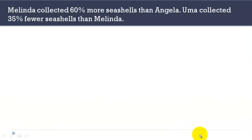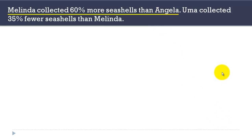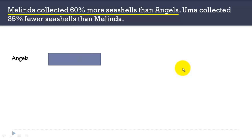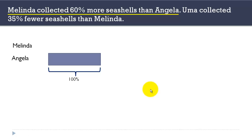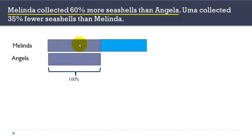Let's take the first part of the question: Melinda collected 60% more seashells than Angela. Let's draw a model. What comes after 'more than' is Angela, so we take Angela to be 100%. Anybody who comes after 'more than' or 'less than' is the reference and is taken as 100%. Melinda, compared to Angela, had 60% more, so 100 plus 60 gives us 160%.